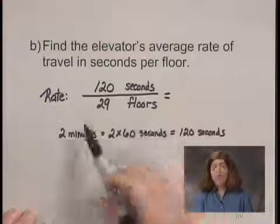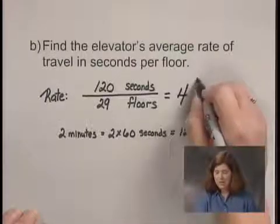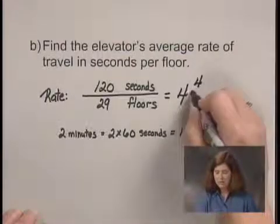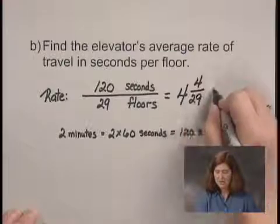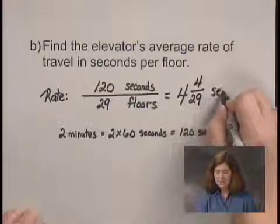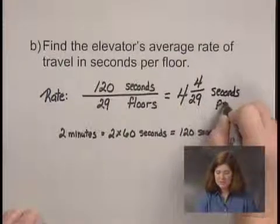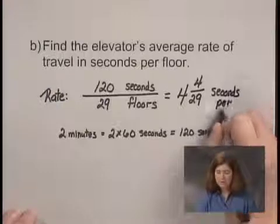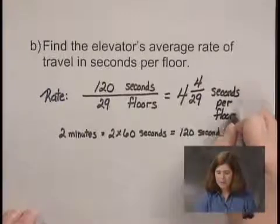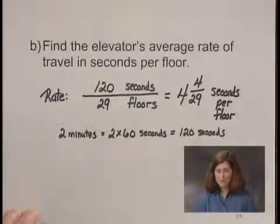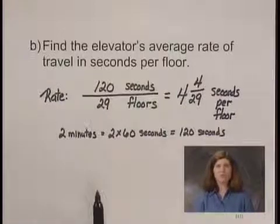Writing that as a mixed numeral, we get 4 and 4 over 29. The unit is seconds per floor, and that is the average rate of travel in seconds per floor.